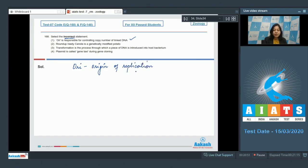Number two, 'Roundup ready canola is genetically modified potato.' This is incorrect, as canola is an oil crop. Thus, genetically modified Roundup ready canola is genetically modified oil seed crop.